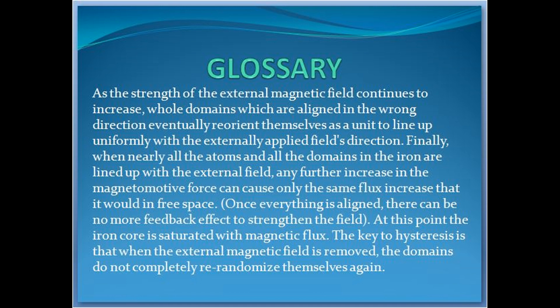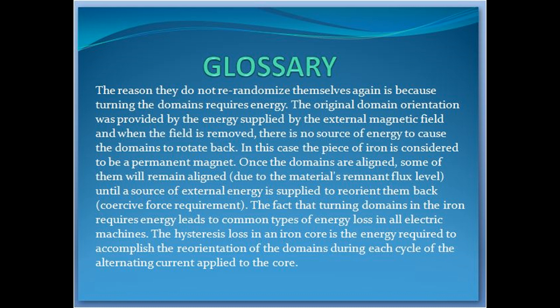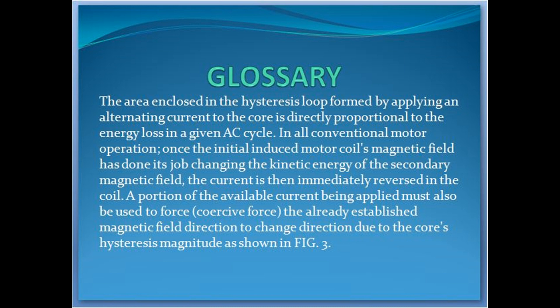The key to hysteresis is that when the external magnetic field is removed, the domains do not completely re-randomize themselves again, because turning the domains requires energy. The original domain orientation was provided by the energy supplied by the external magnetic field, and when the field is removed, there is no source of energy to cause the domains to rotate back — in this case the piece of iron is considered to be a permanent magnet. Once the domains are aligned, some of them will remain aligned due to the material's remnant flux level, until a source of external energy is supplied to re-orient them back (coercive force requirement). The fact that turning domains in the iron requires energy leads to common types of energy loss in all electric machines. The hysteresis loss in an iron core is the energy required to accomplish the re-orientation of the domains during each cycle of the alternating current applied to the core. The area enclosed in the hysteresis loop formed by applying an alternating current to the core is directly proportional to the energy loss in a given AC cycle, in all conventional motor operation.